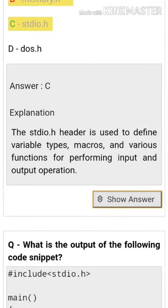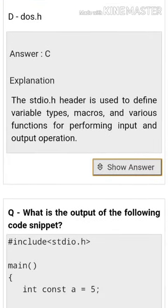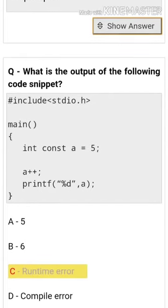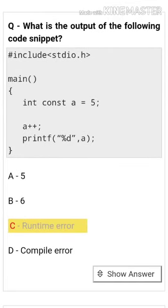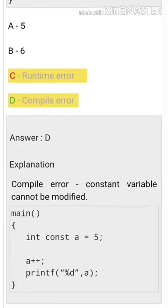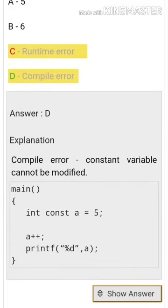Which header file can be used to define input/output function prototypes and macros? Stdio.h. This header is used to define variable types, macros, and various functions for performing input and output operations. The program gives compile error because a constant variable cannot be modified.